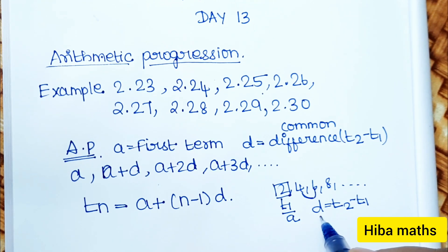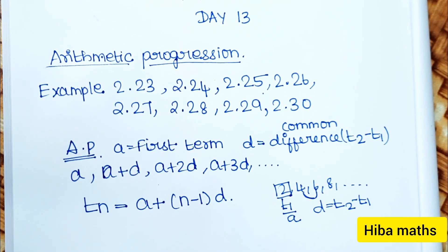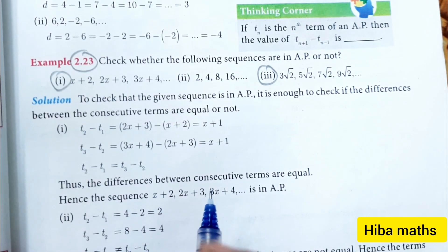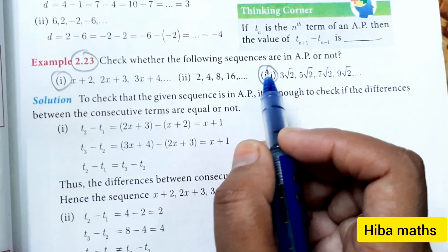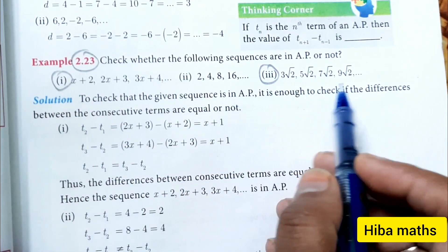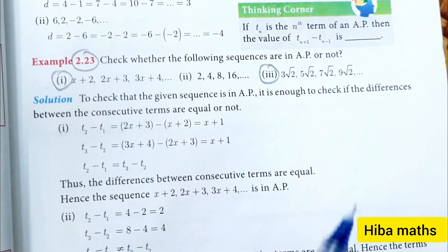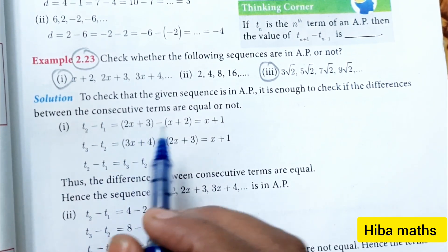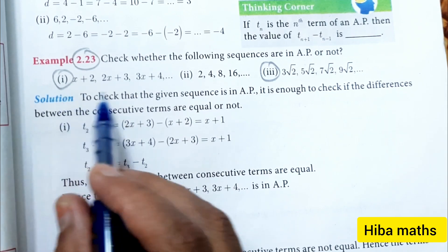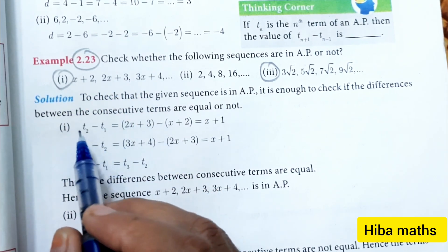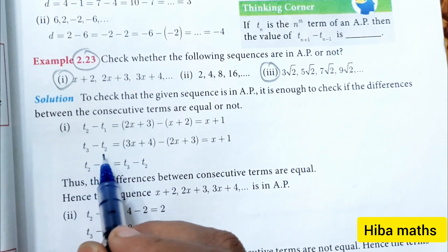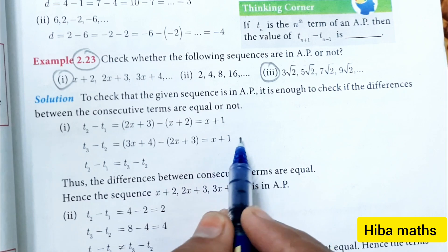The difference t2 minus t1 gives us 'd'. The first question comes from Example 2.23: check whether the following sequences are in AP or not. If we have a sequence with terms T1, T2, T3, we check T2 minus T1 equals T3 minus T2. If the common difference is equal, it is in AP.